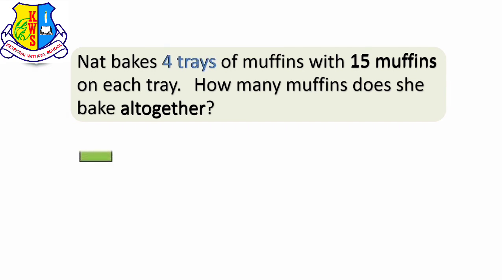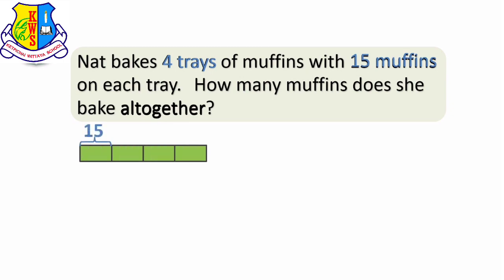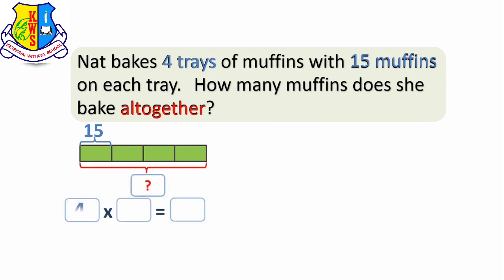First, the trays. Let's draw 4 bars to represent 4 trays. Each tray has 15 muffins, so we can just write 15. How many muffins does she bake all together? We write 4 times 15 is equal to blank.